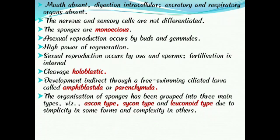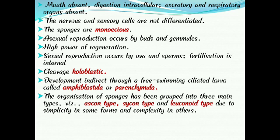Both male and female organs are present in a single individual. In sponges, sperms and ova are produced from a single cell called archaeocytes, which are present in the mesoglia or mesenchyma. In Porifera, both asexual reproduction and sexual reproduction are present. Asexual reproduction occurs by budding and gemmules. Budding is an outgrowth of part of the body leading to individual growth, and gemmules are the reproductive bodies of Porifera.